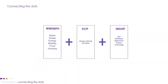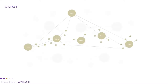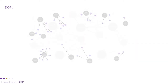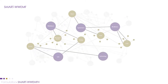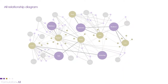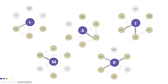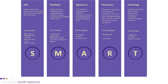After the DOPs arrangement, we connected the different elements. We have WEMPH from the SDGs — sustainable development goals — which stands for Water, Waste, Energy, Mobility, Food, and Housing. We linked WEMPH with DOPs and SMART, showing their interrelationships to arrive at prototype projects based on SMART. This is the SMART framework listed with its prototype projects.